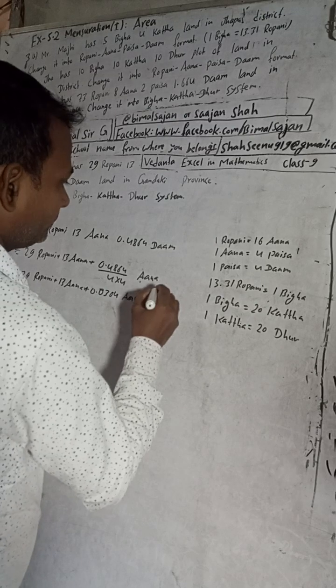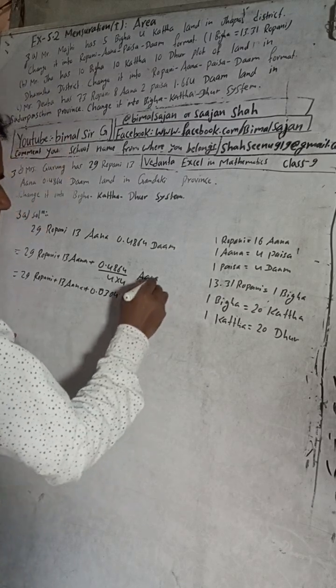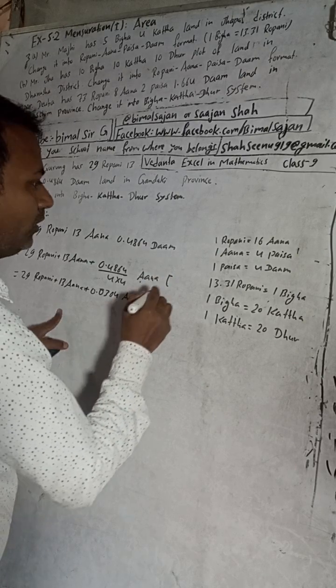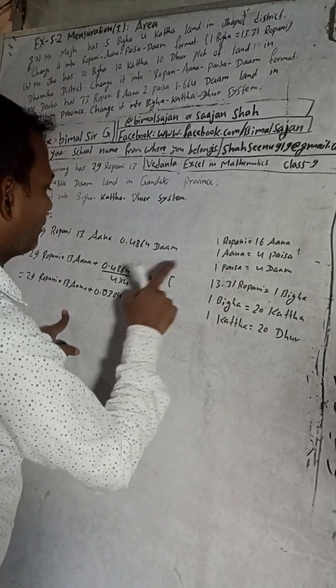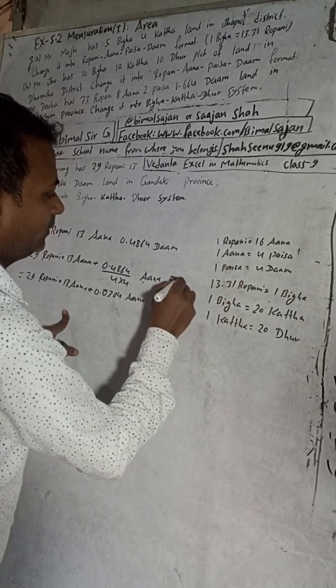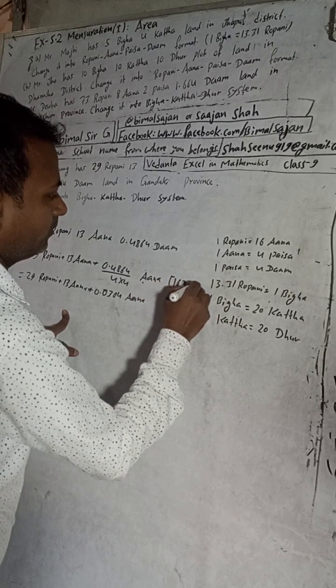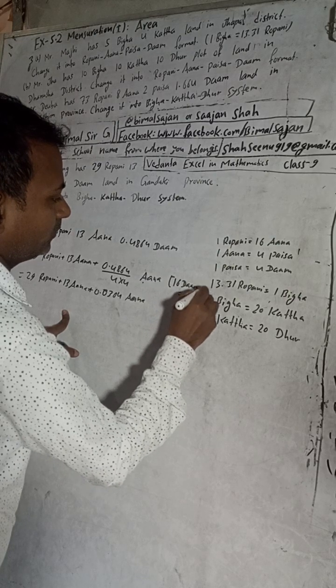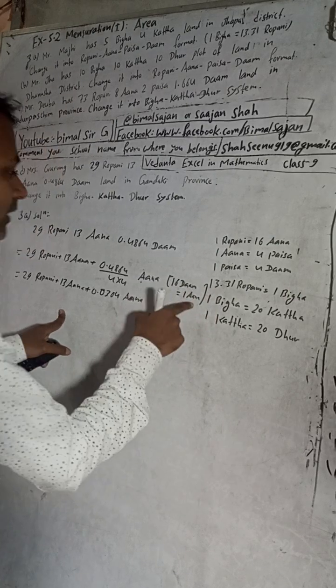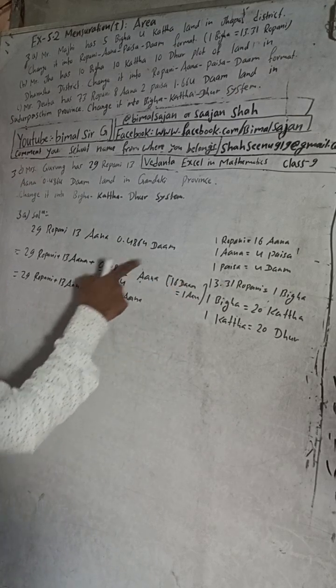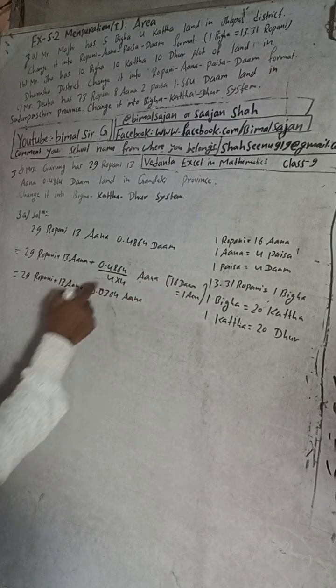And we can write a reason, the reason for this is here, 16, 4 plus 16. 16 Dham is equal to 1 Ana. So divide this Dham by 16, you will get into Ana.